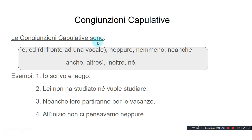Congiunzioni copulative sono — these are connecting conjunctions. E, meaning 'and'; ed, also meaning 'and' but used with words that start with a vowel; neppure, 'even'; nemmeno, 'not even'; neanche, 'neither'; anche, 'too'; inoltre, 'besides'; ne, 'neither'.